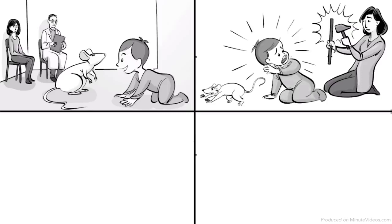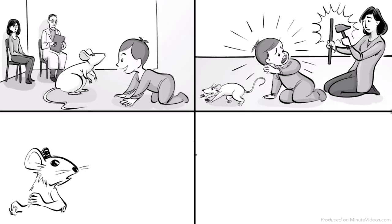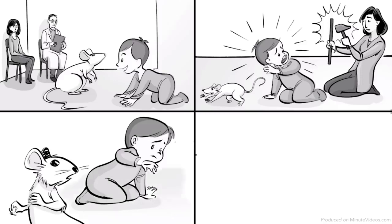Then, Rayner struck a steel bar with a hammer every time Albert reached out to touch the rat, scaring Albert and causing him to cry. Eventually, Albert tried to get away from the rat, showing that he had been conditioned to fear the rat.